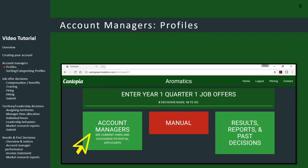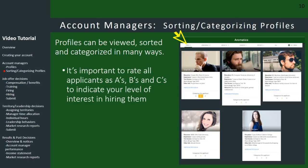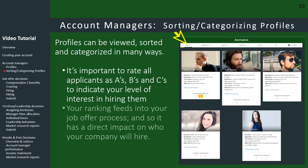For most people, the first step once you start playing is to look at the people and identify the best ones to hire. There are 70 people in the applicant pool. It's important to rate all applicants as A's, B's, and C's to indicate your level of interest in hiring them — A's being your favorites, C's your least favorites, B's in the middle. Your ranking feeds into the job offer process and has a direct impact on who you end up hiring.